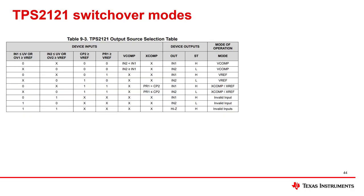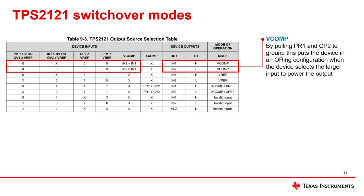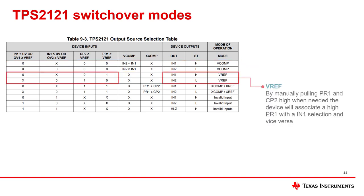Now let's look at the TPS2121 truth table. In VCOMP mode, by pulling PR1 and CP2 to ground, the device is put in an ORing configuration where it selects the larger input to power the output. In VREF mode, by manually pulling PR1 and CP2 high when needed, the device will associate a high PR1 with an N1 selection and a high CP2 with an N2 selection.